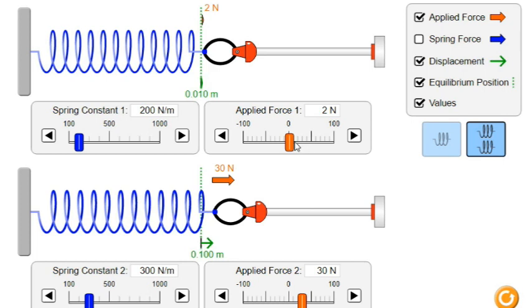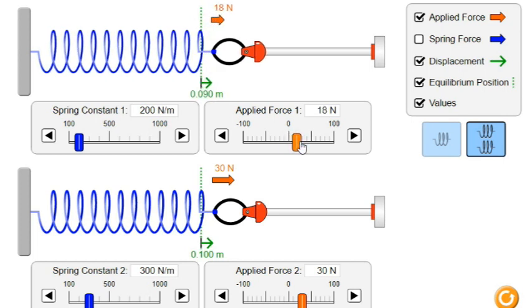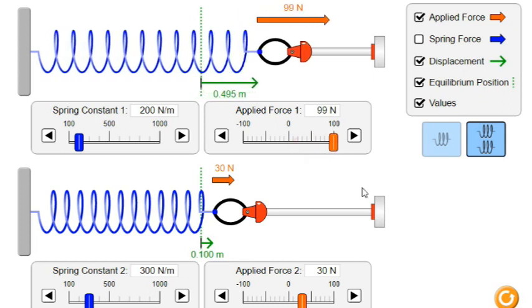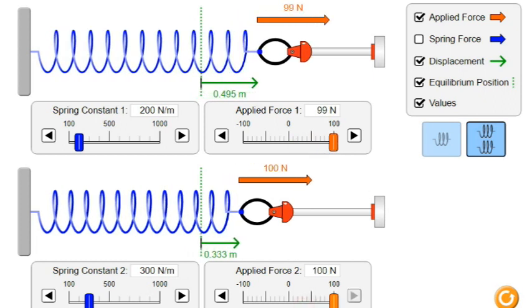Remember, the force required to extend or compress a spring is proportional to the distance it is extended or compressed from its rest position, and the proportionality constant is the spring constant. Understanding Hooke's law is essential for anyone interested in studying physics or engineering. Thank you for watching.